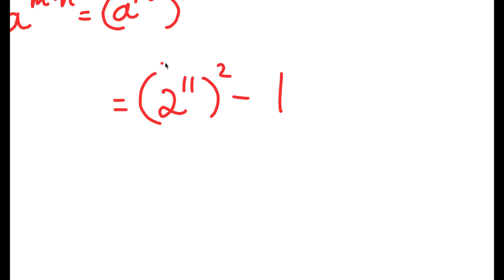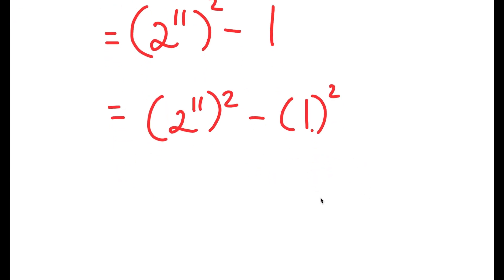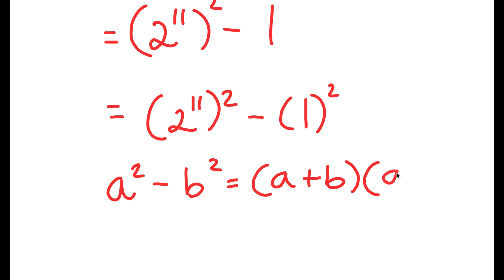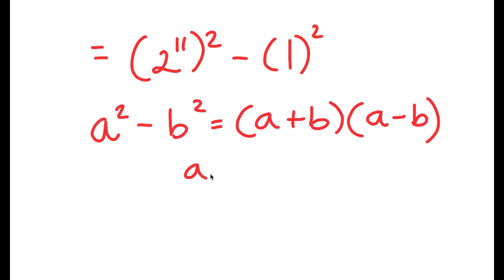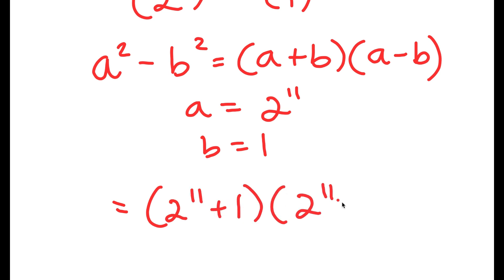From here, I can rewrite 1 as 1 squared, because 1 is the same thing as 1 squared — and you'll see why I did that in a minute. So I have 2 to the power of 11, squared, minus 1 squared. Now the reason I did this is because I can use the property a squared minus b squared equals a plus b times a minus b. So in this case, a is equal to 2 to the power of 11, and b is equal to 1. This gives us 2 to the power of 11 plus 1, times 2 to the power of 11 minus 1.